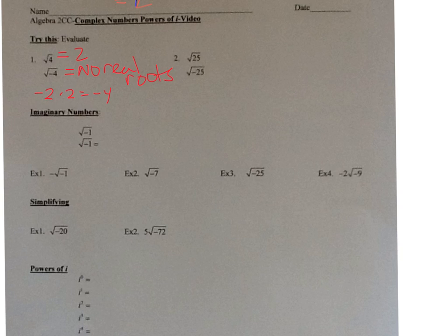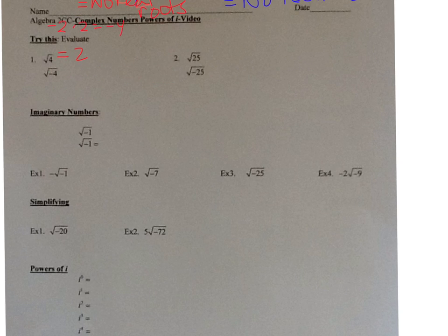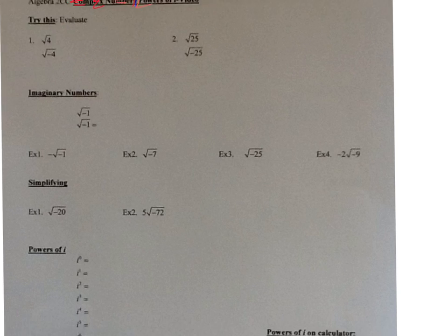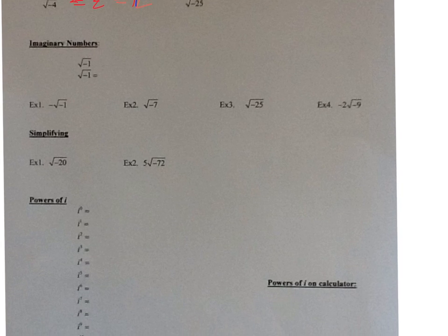What about the square root of 25? The square root of 25 is 5. What about the square root of negative 25? That would be no real roots. This is where imaginary numbers come in.